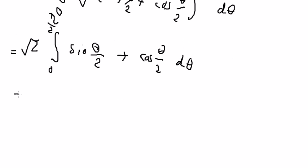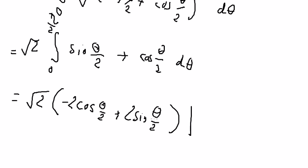So we can get the final answer. Integrating gives negative cosine theta over 2 multiplied by 2, plus 2 sine theta over 2, evaluated at the bounds.